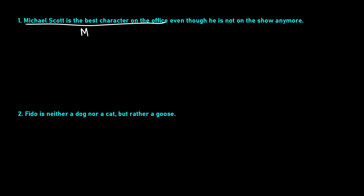He is not on the show anymore. So here's a proposition, but we have a NOT in it, so NOT is going to be an operator. I'm going to call 'he is on the show' as S. We also have another operator: 'even though,' which has the same meaning as AND. We can't translate contrast into logic, so we treat this as AND. Our connectives are in order, so we can translate this as M AND NOT S.